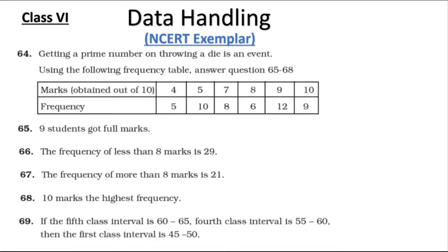Statement 64: Getting a prime number on throwing a die is an event — this is true. On throwing a die, there are three prime numbers: 2, 3, and 5. These are the outcomes.